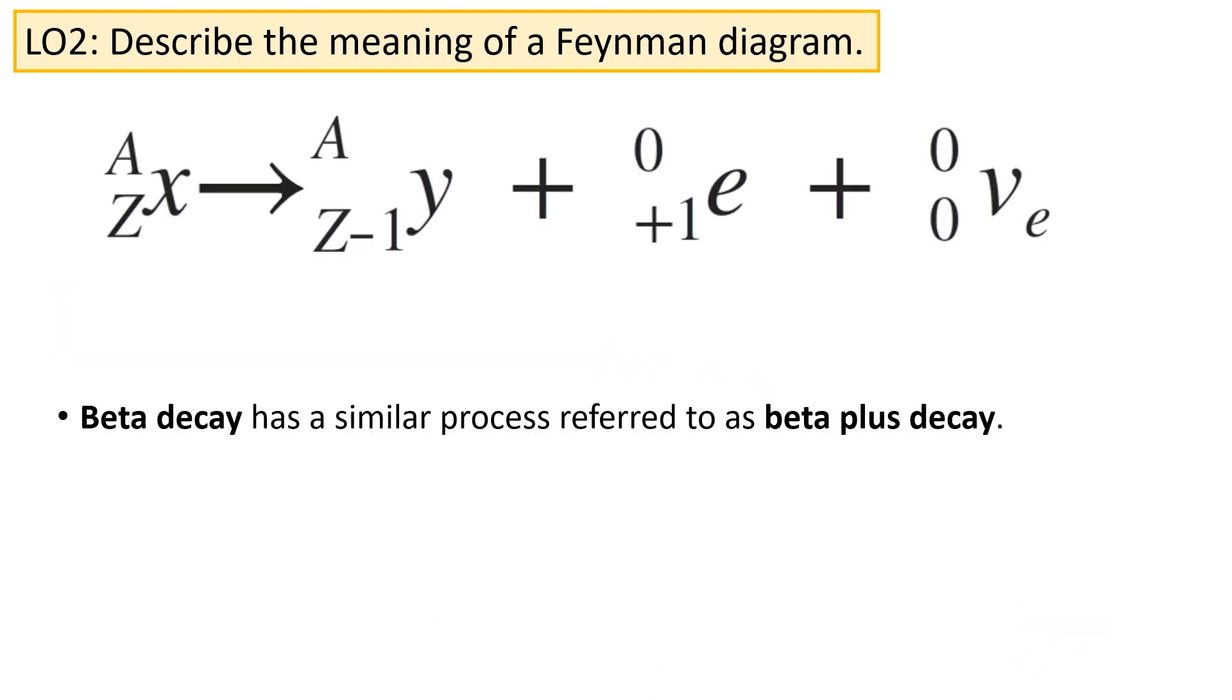There's another similar process to beta decay called beta plus decay. Instead, in beta plus decay, what happens is a proton changes into a neutron, releasing a positron and a neutrino.